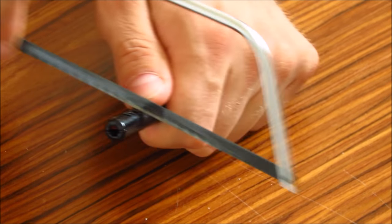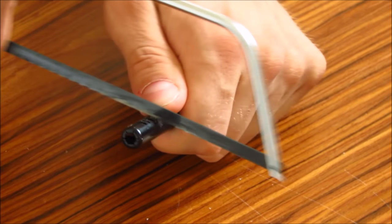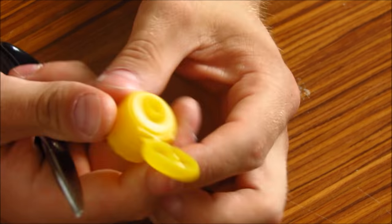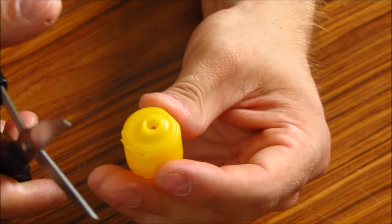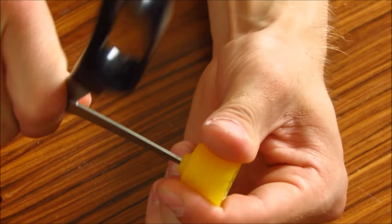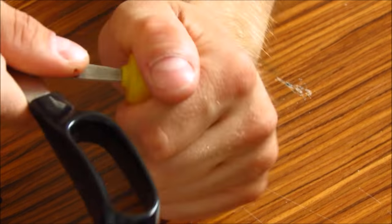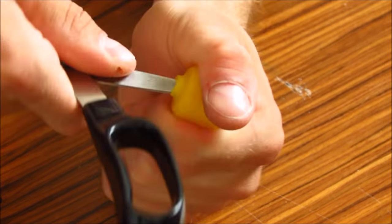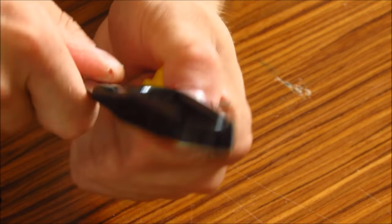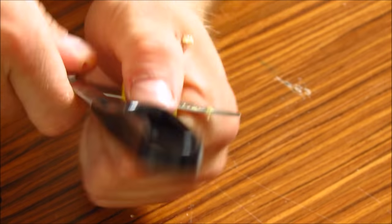You see this second part from the barbecue lighter? I'm going to use it as a barrel. I cut a bit off and made a hole in this cork. The hole needs to be big enough to fit the barrel through it.